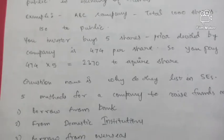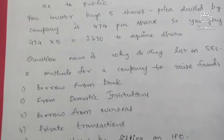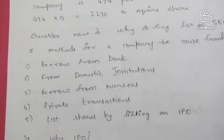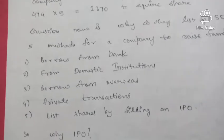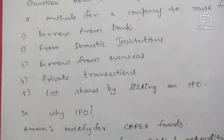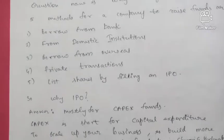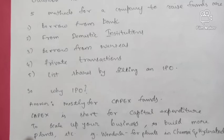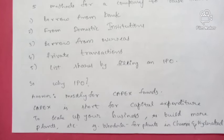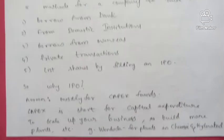There are five methods for a company to raise funds: first, borrow from a bank; second, borrow from domestic institutions; third, borrow from overseas; fourth, through private transactions; and fifth, by listing their shares by filing an IPO. Companies mostly go public for capex — capital expenditure — to scale up their business and build more manufacturing plants.